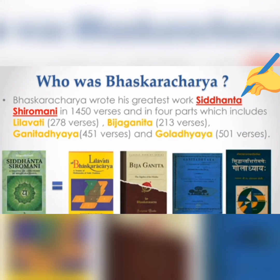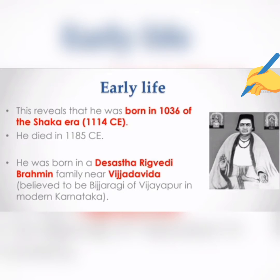Bhaskara Acharya wrote his greatest work, Siddhanta Shiromani, in 1,450 verses divided into four parts: Leelavati, Beej Ganit, Ganit Adhyay, and Gola Adhyay. His writings reveal he was born in 1036 of the Shaka era, i.e., 1114 CE, and died in 1185 CE. He was born into a Brahmin family near Vijaypur in modern Karnataka.